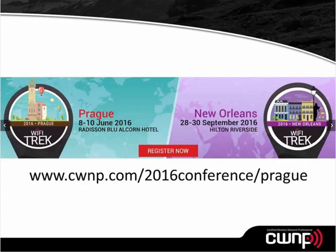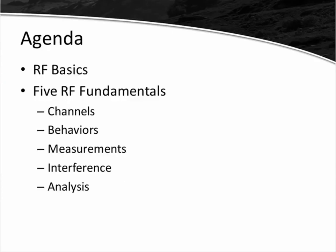Additionally, before we get into today's specific topics, I want to remind you about our Wi-Fi Trek conferences coming up in the next few months. First, we'll be in Prague on June 8th through the 10th at the Radisson Blue Alcorn Hotel. Then we'll be in New Orleans later in the year, September 28th through the 30th at the Hilton Riverside. You can find more information at CWNP.com, or go to CWNP.com/2016-conference/Prague for the Prague registration page.